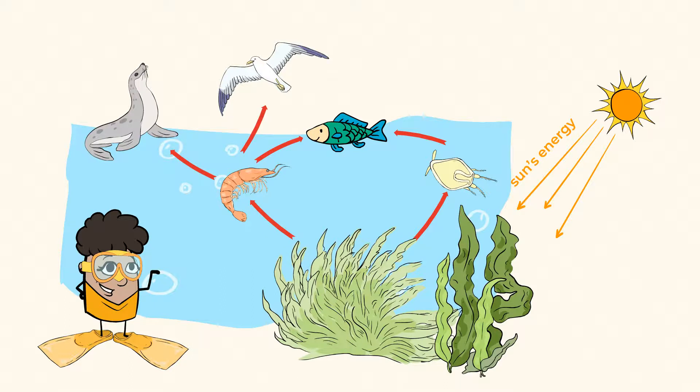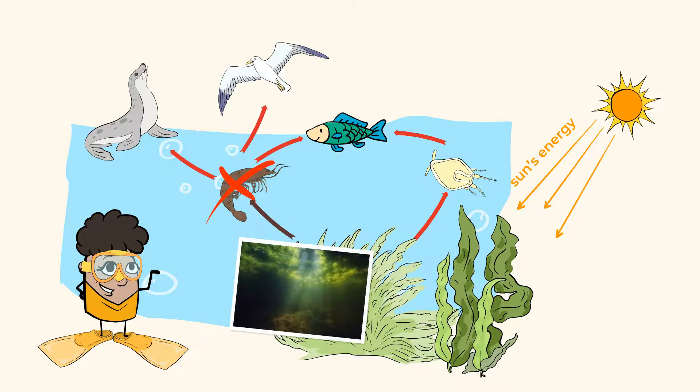So, once again, we see that everything in this web is connected and each part depends on the other. If the shrimp disappear, there would be too much algae in the water, which can create major problems for the fish. You see, algae can make it so that there is not enough oxygen in the water. And fish need oxygen to survive.